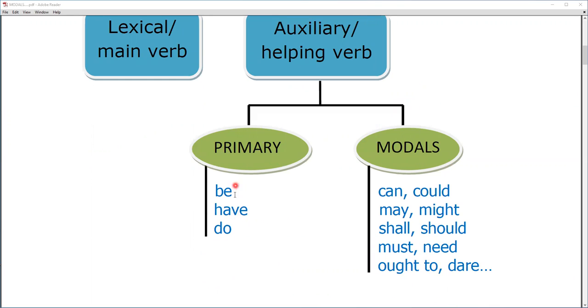Primary has three parts: be, have, do. It is a helping verb you use in your tenses. The family of be is: is, am, are, was, were. The family of have is: has, have, had. And the family of do is: do, does, did.